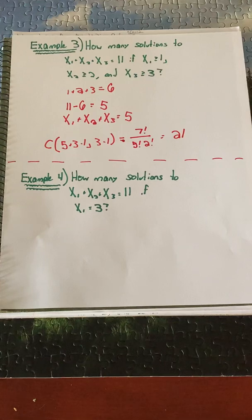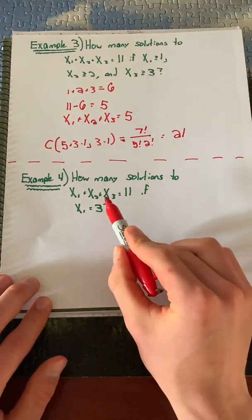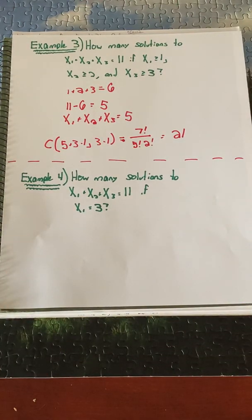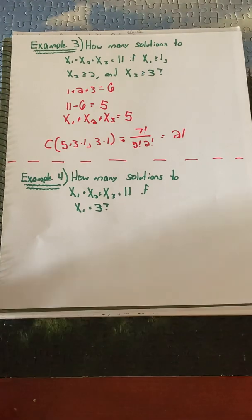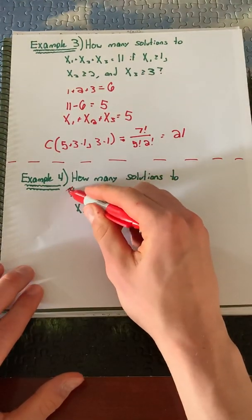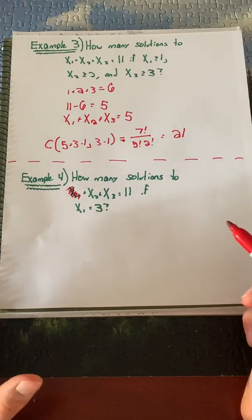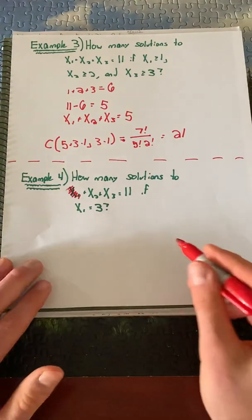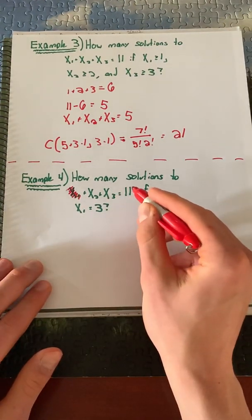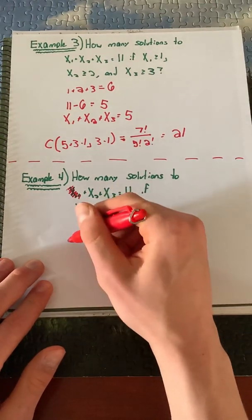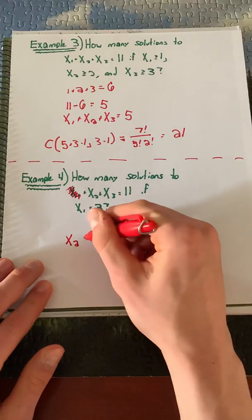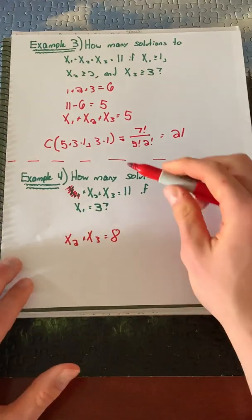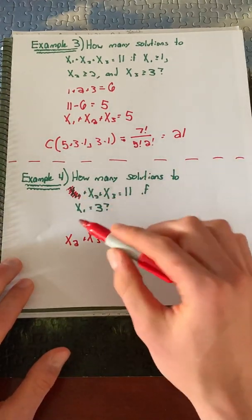Another constraint we can have is like Example 4. How many solutions are there if x₁=3? So no matter what, x₁ has to equal 3. In essence, this actually removes x₁ from our equation. If x₁ equals 3, there are no real combinations we can make with it—it's stuck at 3. So we apply this 3 to 11 as well, and we end up getting x₂+x₃=8 is what we're now trying to solve. We subtracted 3 from 11 and got rid of our x₁ variable.